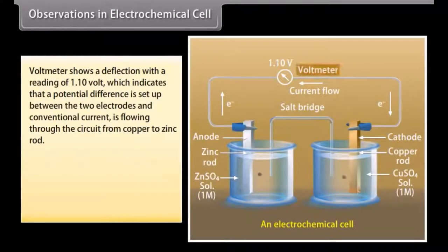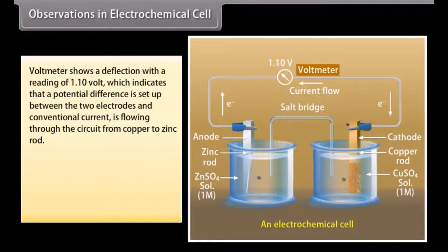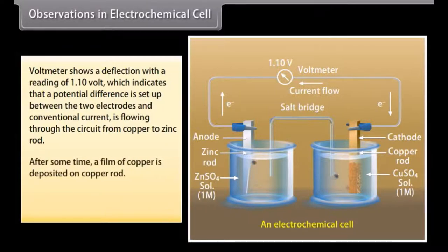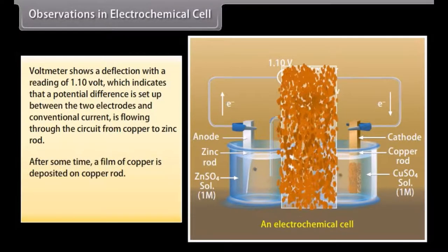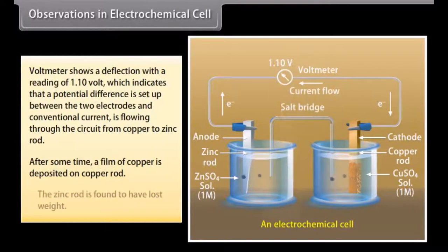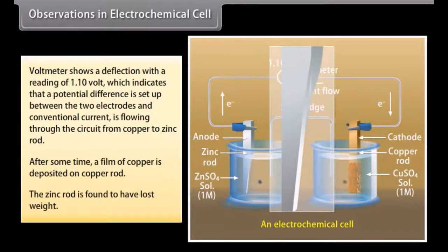Observations in electrochemical cell. The voltmeter shows a deflection with a reading of 1.10 volt, which indicates that a potential difference is set up between the two electrodes, and conventional current is flowing through the circuit from copper to zinc rod. After some time, a film of copper is deposited on the copper rod and the zinc rod is found to have lost weight.